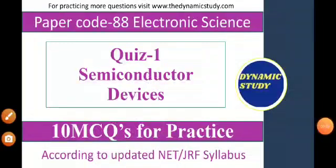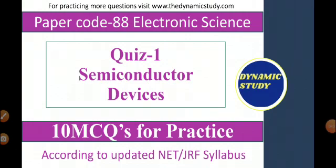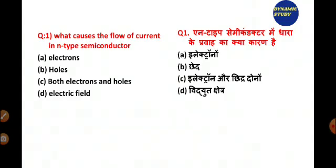Hello everyone, welcome to Dynamic Study. This is the first quiz for electronic science students, and our topic is semiconductor devices. Our first question is: what causes the flow of current in an n-type semiconductor?